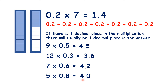But we know that 4.0 is usually just written as 4. So while there is usually one decimal place in the answer, we can still get a whole number as our answer when we multiply by a decimal. But that only happens when, if we were multiplying by whole numbers, we'd have a 0 on the end.